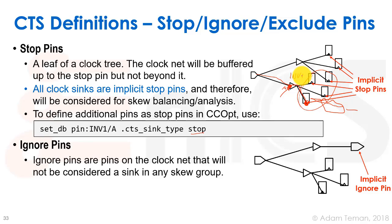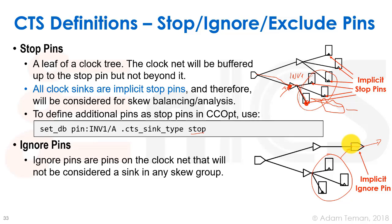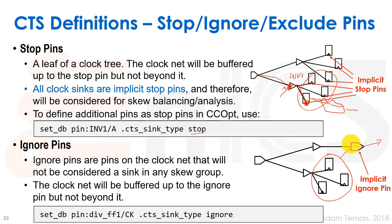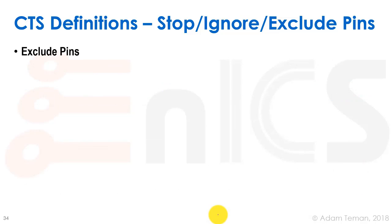An ignore pin is a pin on the clock tree that will not be considered a sink in any skew group. For example, if a clock tree has a primary output, we don't want to skew balance that output with internal flip-flops, since the output drives outside the block and is unrelated to internal skew balancing. We still want DRV fixes up to it, but we want the tool to ignore it for balancing. A primary output is an implicit ignore pin. To define an ignore pin explicitly, use: setdb pin <pin_name> .cts_sink_type ignore.